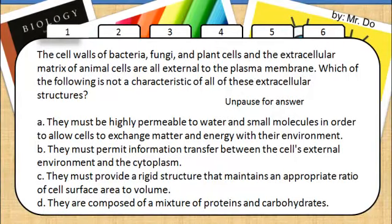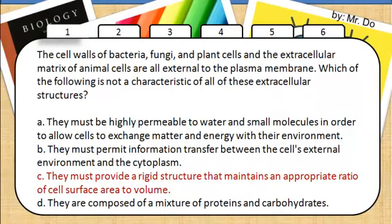Number 1. The cell walls of bacteria, fungi, and plant cells and the extracellular matrix of animal cells are all external to the plasma membrane, which of the following is not a characteristic of all these extracellular structures. C. They must provide a rigid structure that maintains an appropriate ratio of cell surface area to volume.